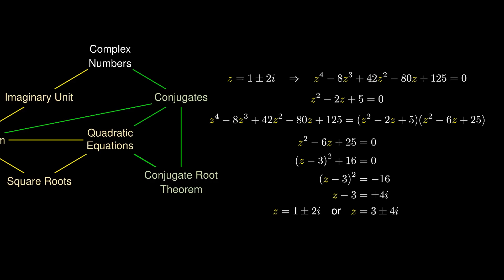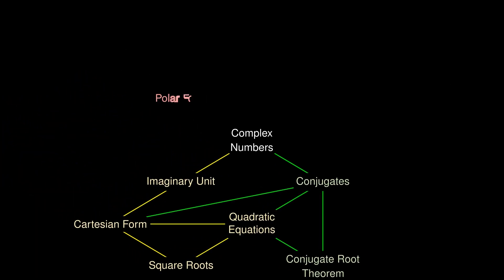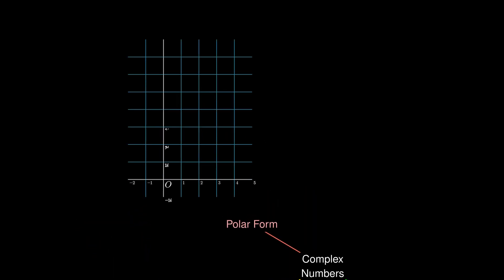Now that we've seen some of the utility of complex numbers, let's return to our question of visualizing complex number multiplication. For a complex number a + bi, instead of x and y coordinates, we consider r, the distance from the origin, calculated via √(a² + b²), motivated by the Pythagorean theorem.